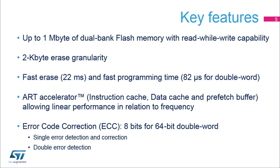The STM32L4's flash memory has several key features. It has up to one megabyte of dual bank flash memory with a read while write capability that can program or erase one bank while executing code from the other bank. The erase granularity corresponding to the page size is only 2 kilobytes. A page, bank, or mass erase operation requires only 22 milliseconds, and the programming time is only 82 microseconds for a double word.